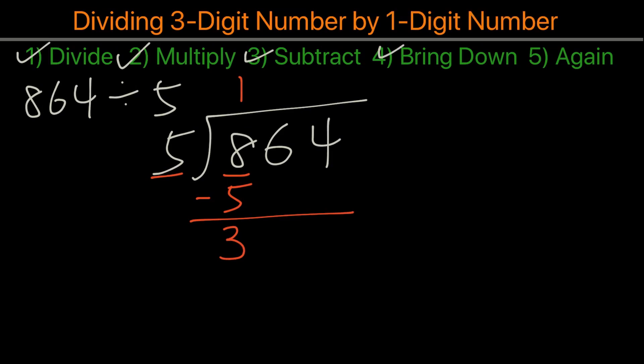Then that leads to the next step, which is to bring it down. We'll bring down the next number and repeat the process again. In this case, now that we brought it down, this becomes 36.